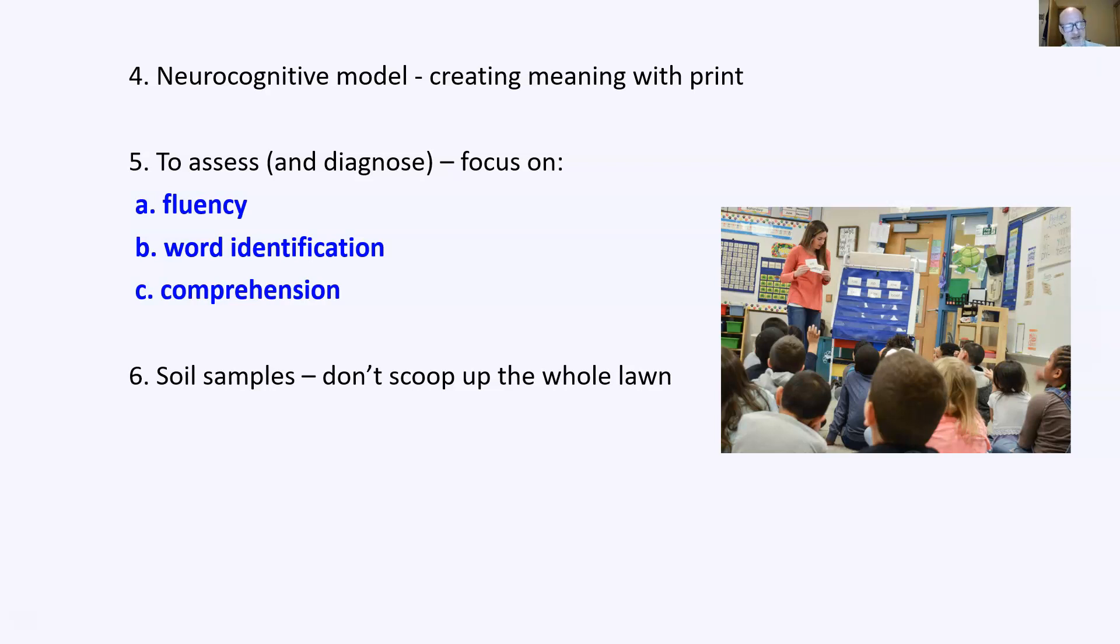Well, how do you identify, how do you assess word identification? Well, of course, a running record is the best way in an authentic reading context. When you assess, it's like soil samples. You don't scoop up the whole lawn to get a sense of what that soil is in a lawn. You take little scoops here and there. The same with assessment. You take little bits here and there every week or two or three weeks, depending.